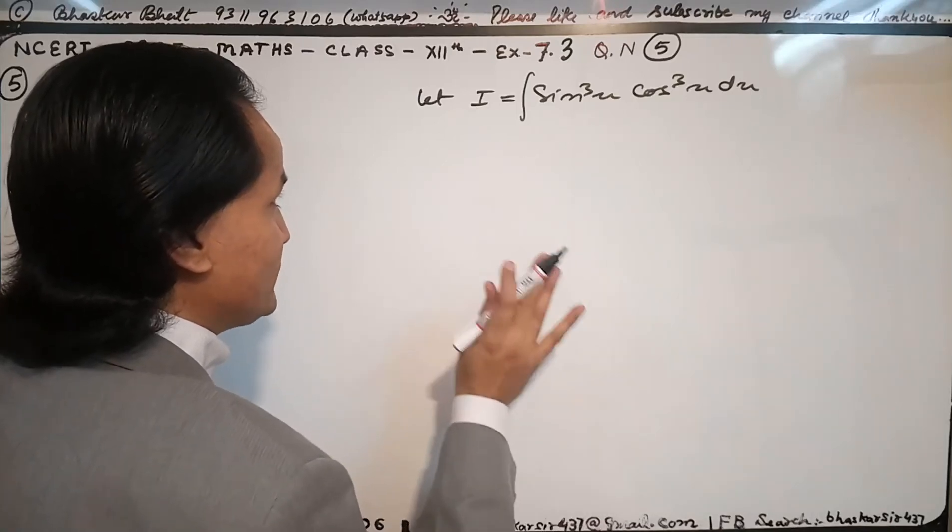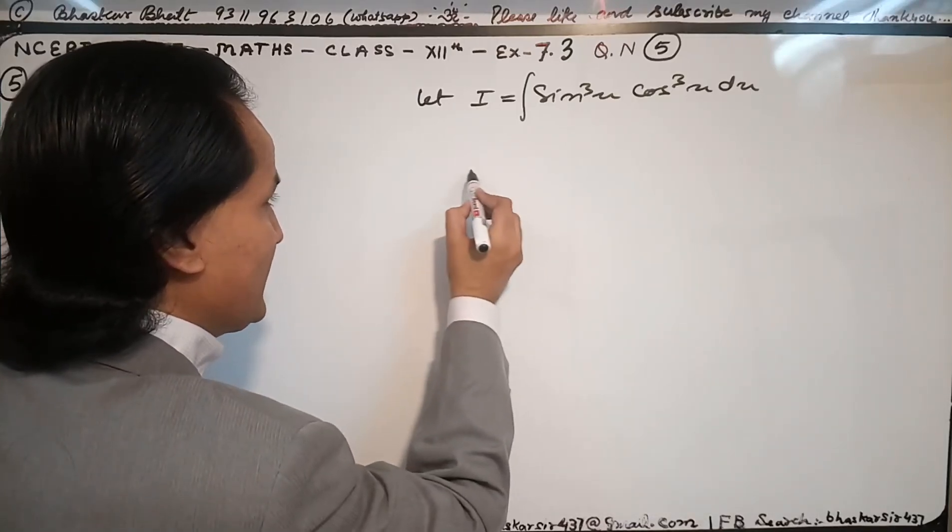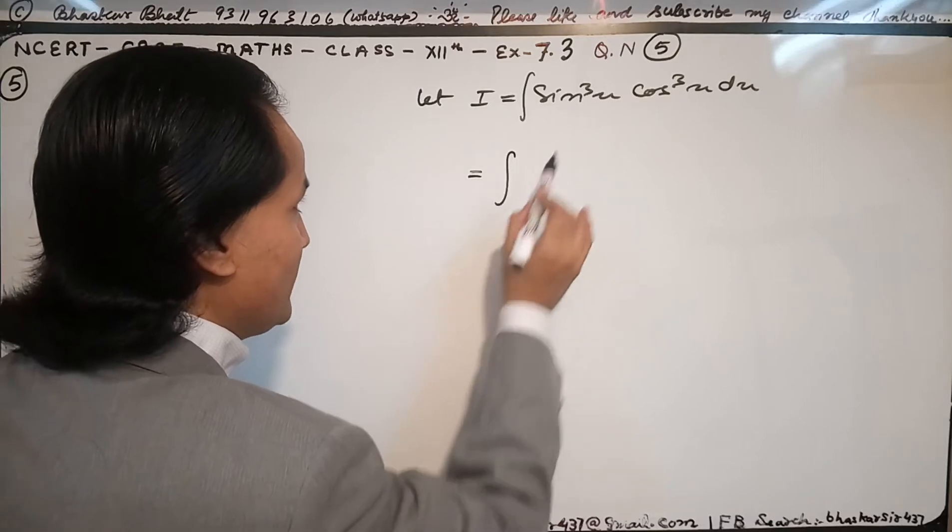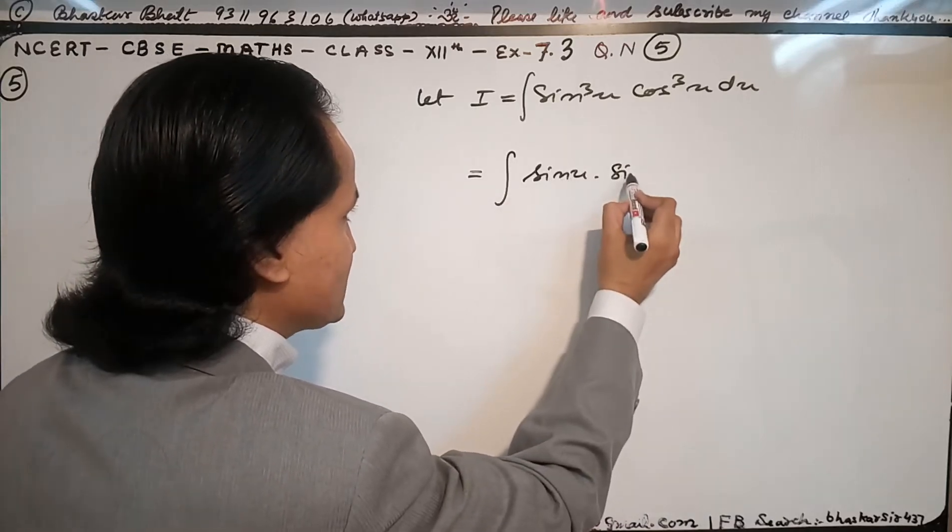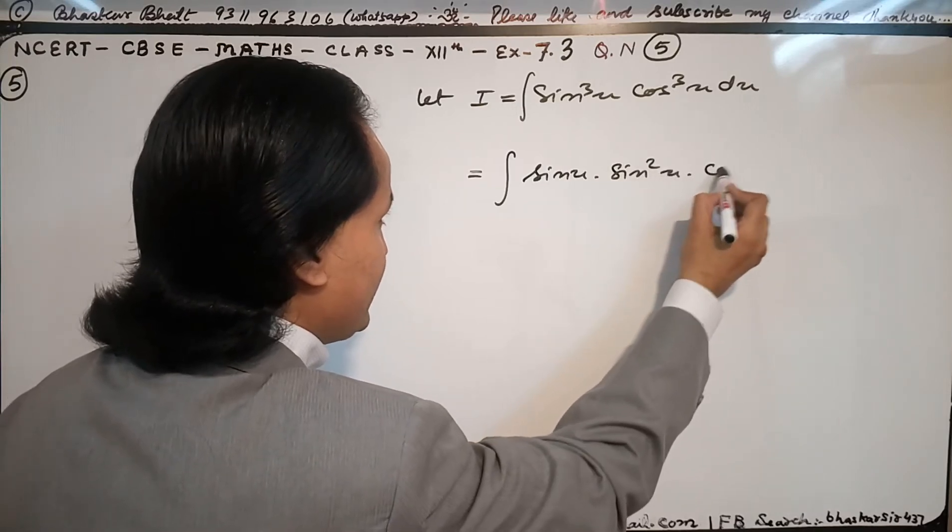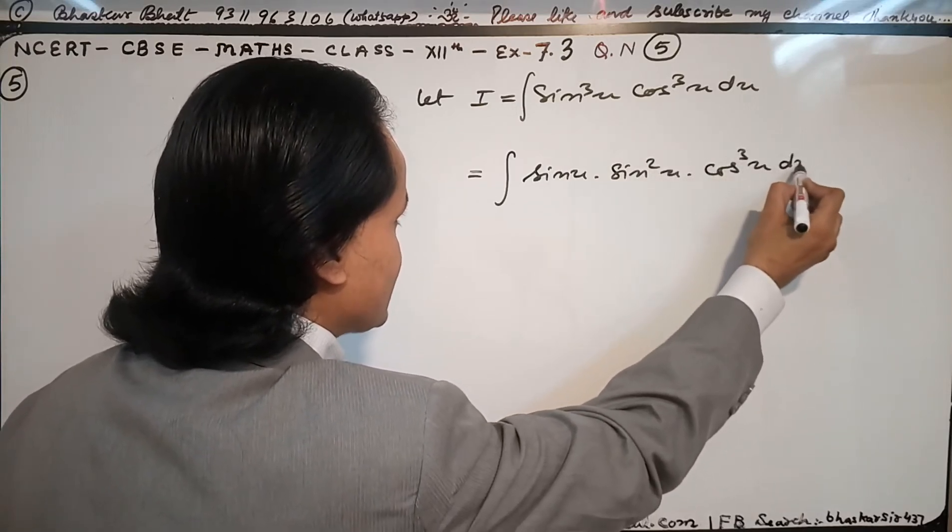We have the fifth question of Exercise 7.3, a very simple question. I am using a very simple technique here. I can write sine cube x as sine x times sine square x, and cos cube x dx.